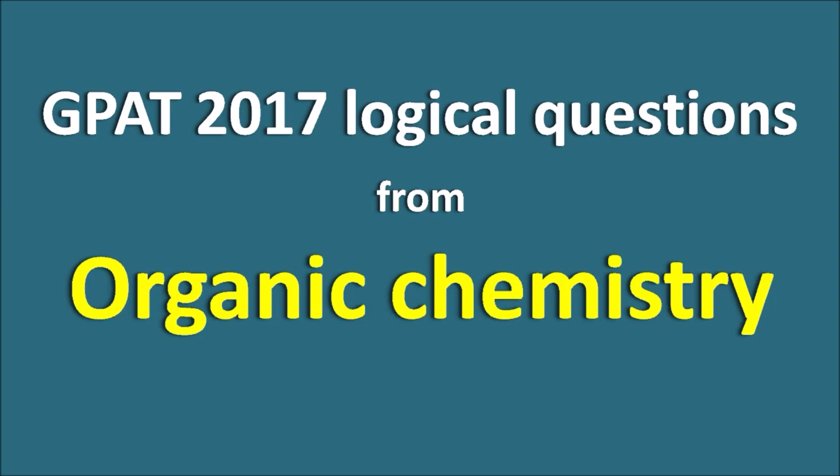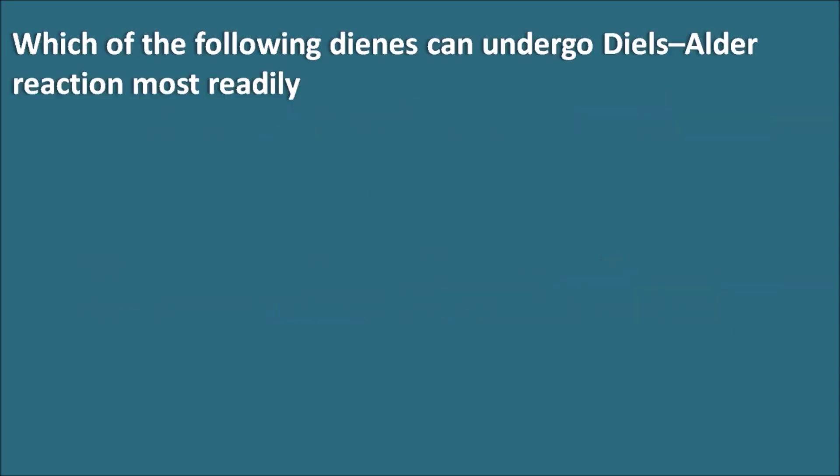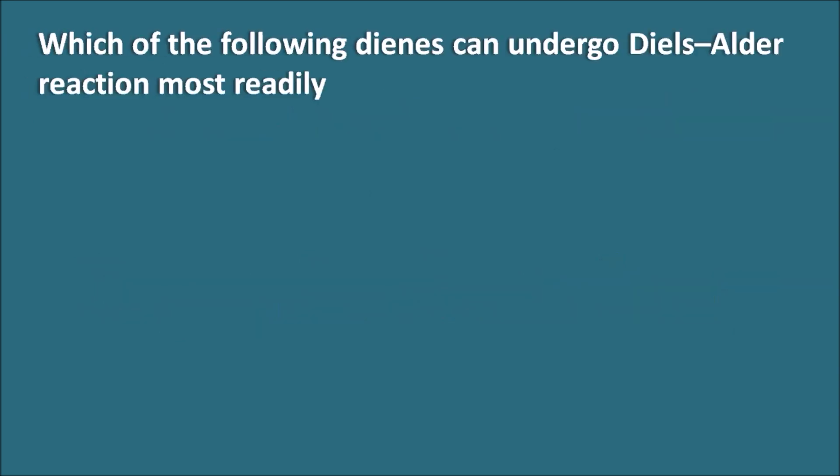GPAT 2017 logical questions from organic chemistry. Let us start with the first question: which of the following dienes can undergo Diels-Alder reaction most readily?